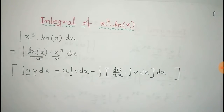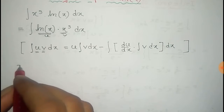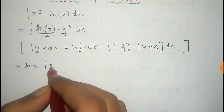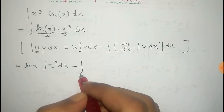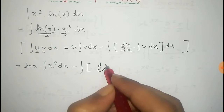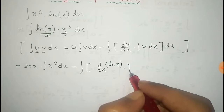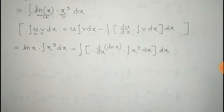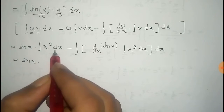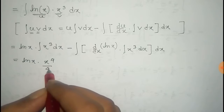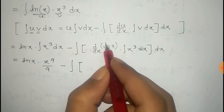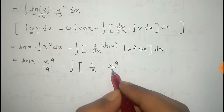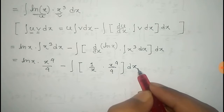Applying this formula, taking log x as u and x cube as v, it would be: first function log x into integral of the second function, that is integral of x cube dx, minus total integral of derivative of the first function d/dx of log x, into integral of the second function, that is integral of x cube dx. This equals log x times x to the power 4 by 4, minus total integral of 1 by x into x to the power 4 by 4 dx, plus a constant c.